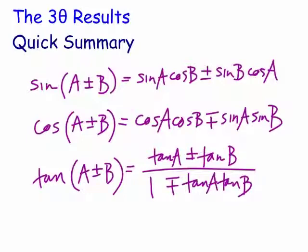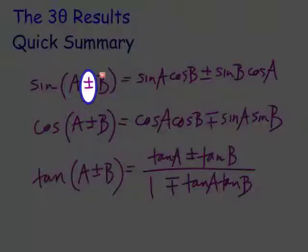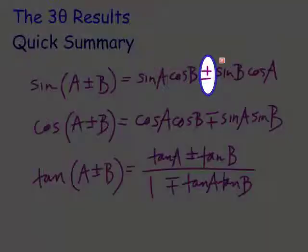We have sin(a ± b) = sin(a)cos(b) ± sin(b)cos(a). Notice the signs are the right way up for both expansions. What I mean by that is the plus-or-minus here is also a plus-or-minus in the expansion.